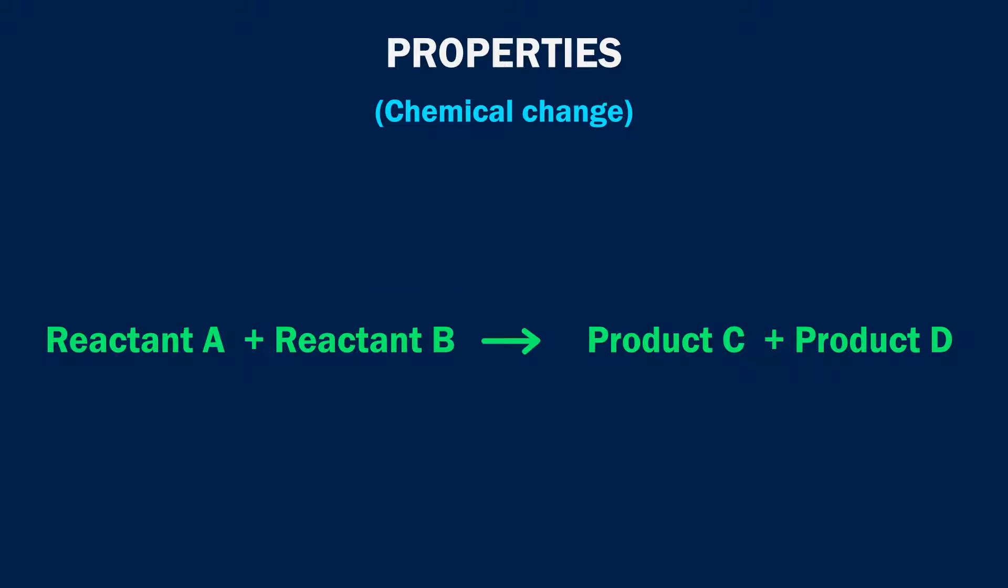2. In most cases, chemical changes are irreversible, meaning reactants cannot be formed from products.